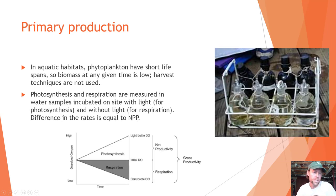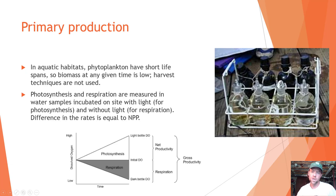In aquatic habitats, phytoplankton have a very short lifespan so biomass at any given time is low, and harvest techniques are not used. Instead, photosynthesis and respiration are measured with water samples incubated on site — with light for photosynthesis and without light for respiration — and the difference gives the rate of NPP. Dark bottles and light bottles are submerged in a lake to equilibrate with local temperature, then dissolved oxygen in the two containers is measured to estimate how much primary productivity occurred during that time period.